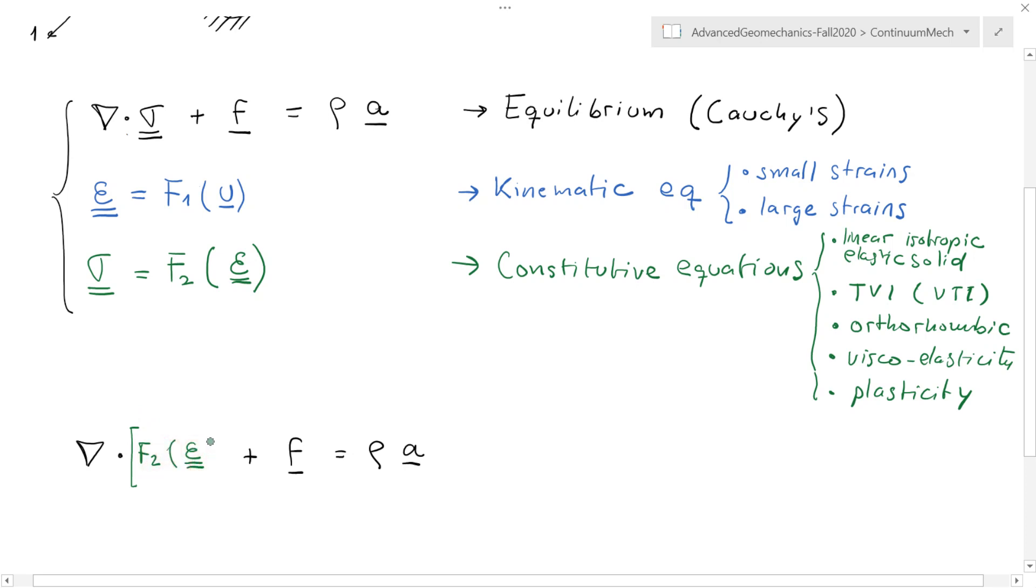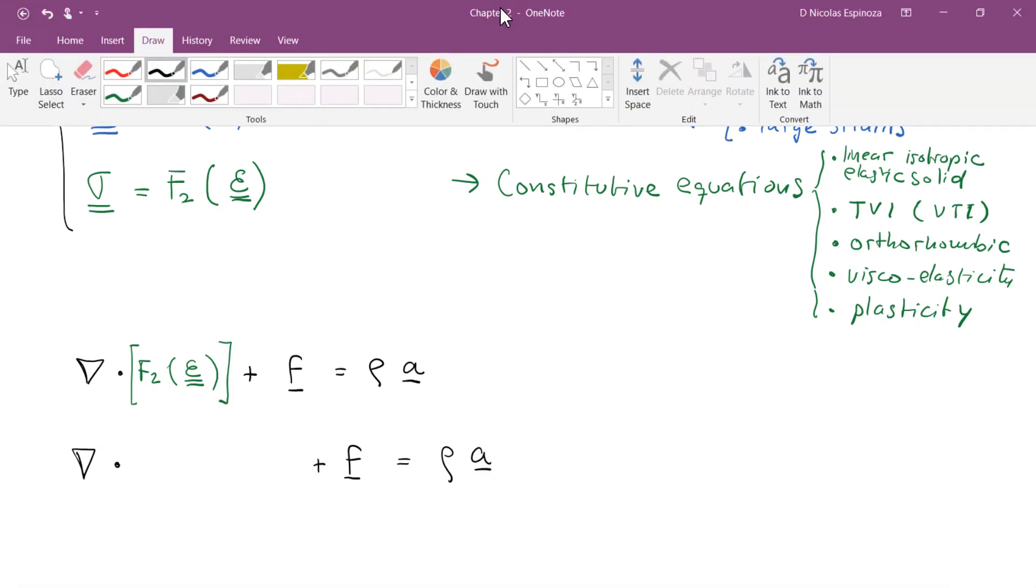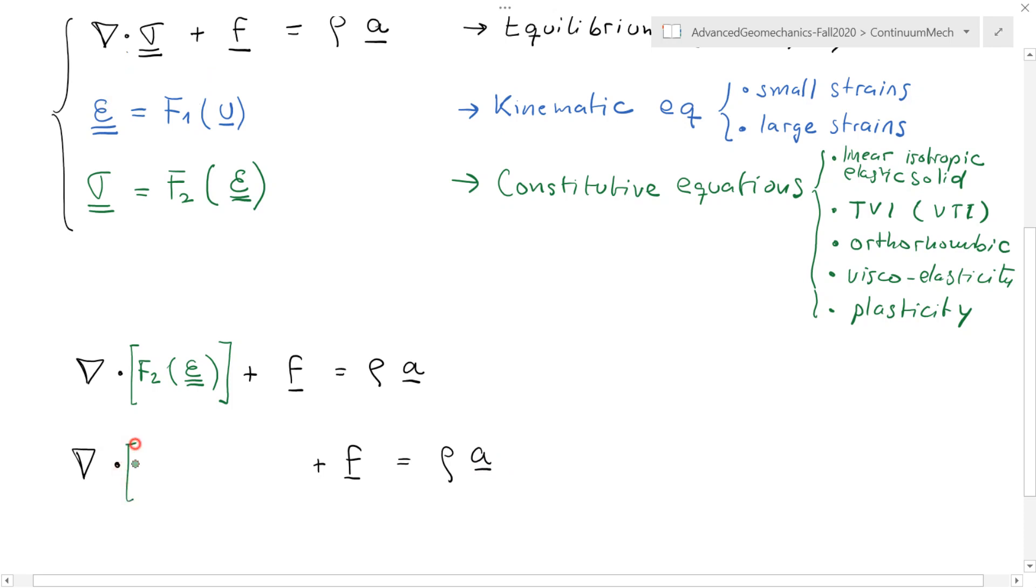But we have seen that the strains depend on kinematic equations, right? So if we go one step further, then now this equilibrium equation is going to turn into function F2 of the kinematic equation, which in this case is going to be F1 of the displacement.